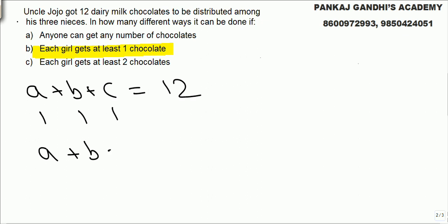Give one chocolate to each girl. So now remaining things. How many chocolates are remaining? 9. We have satisfied that condition. Each girl got at least one. One one one we have given. So now remaining nine chocolates. Again three variables.